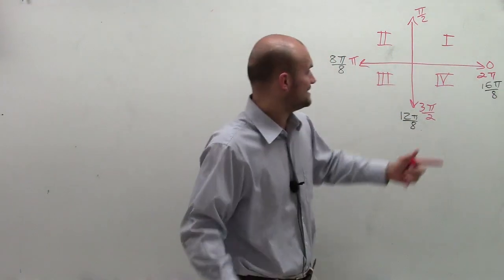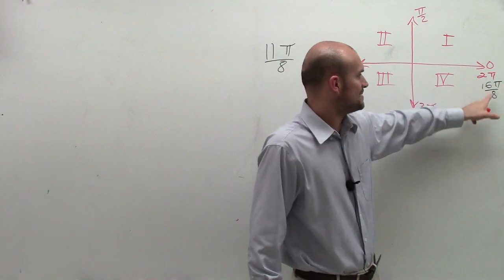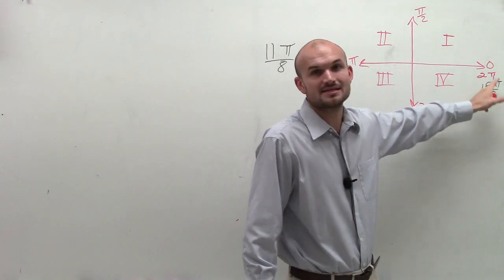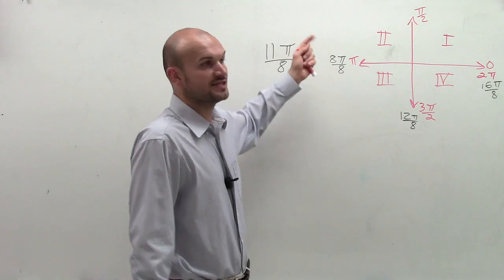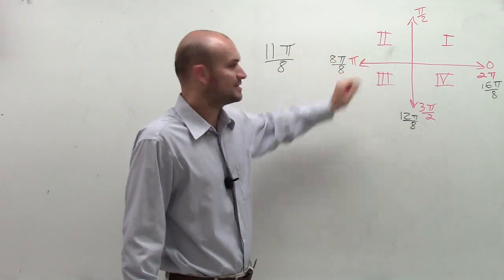So what I did is I related these, because 2π is the same thing as 16π divided by 8. Because take 16 divided by 8 and you get 2π. 8 divided by 8 is 1. 1 times π is π, so you can see how I related.